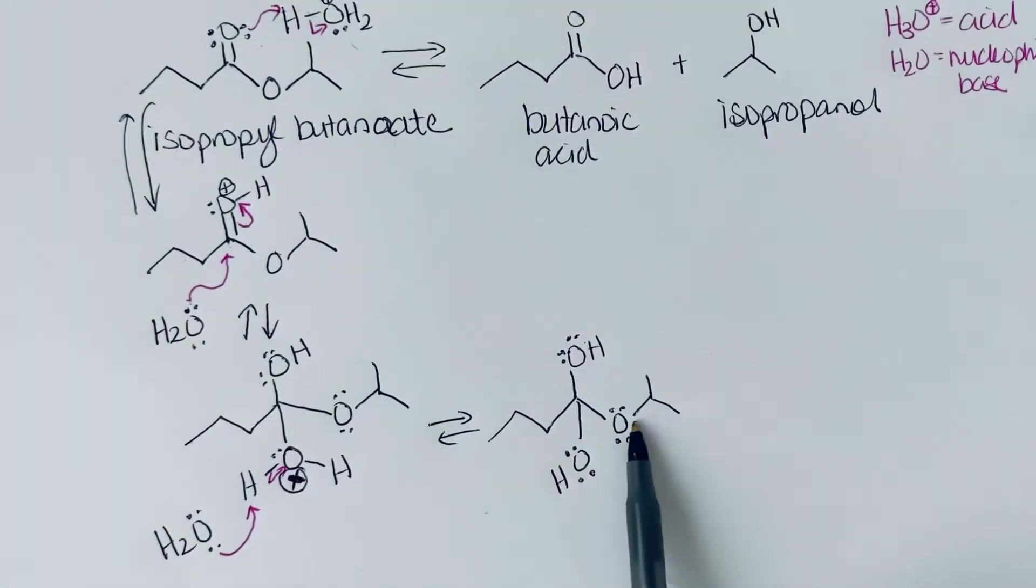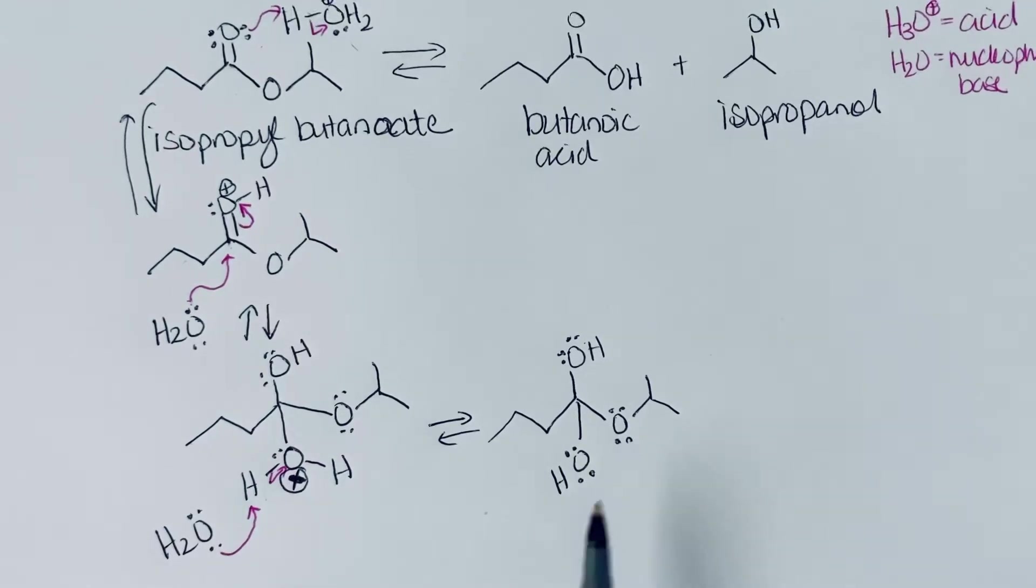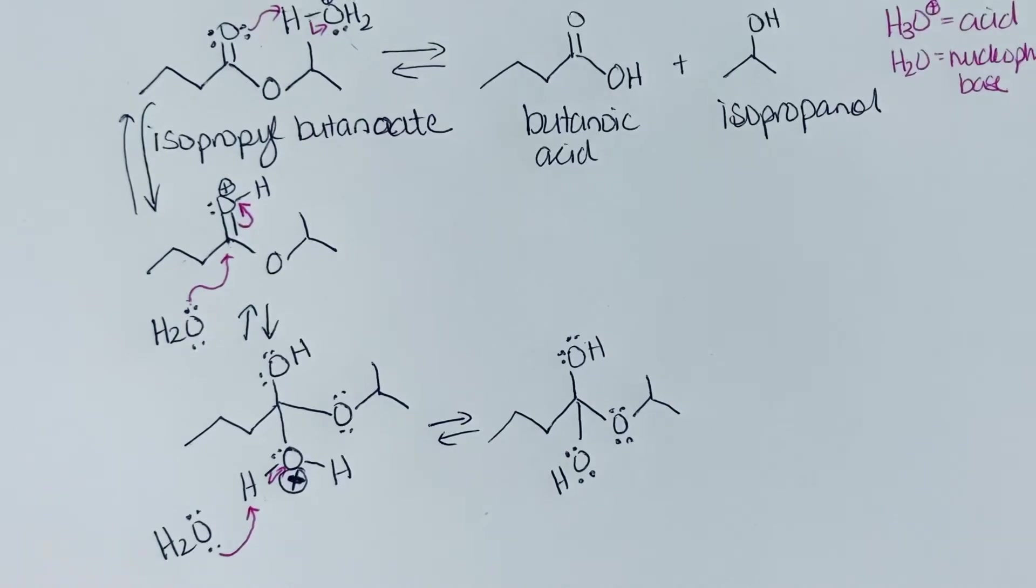And now we're going to put a proton on this oxygen. So you might be wondering about the order of these steps. So we want to make sure we take this proton off before we add one here. Because it's only a catalytic amount of acid. To have this molecule doubly protonated, we'd need a really acidic solution. And that's just not what we're dealing with. So you have to take one proton off before we add the next one on.